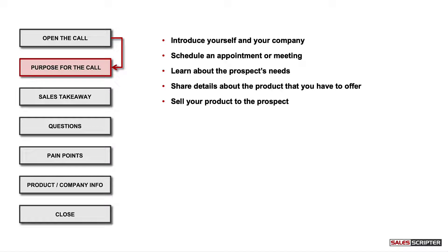Now, remember, we want to minimize how much we look like a salesperson that's trying to sell something, to decrease having to face objections, rejection, and resistance. So we want to avoid saying anything close to any of these as the purpose for our call. But we also don't want to mislead the prospect or be dishonest in any way. So we want to spin the reason for our call in the best possible way, using different building blocks from our sales message.